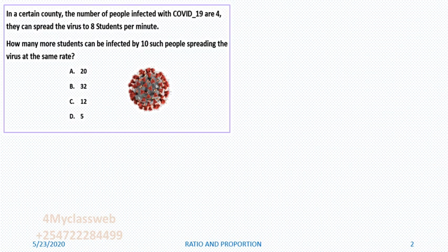Before I solve this question, it is always important to read the question and understand it. We are going to read this question together. We are told that in a certain county, the number of people infected with COVID-19 are 4, and they can spread the virus to 8 students per minute. How many more students can be infected by 10 such people spreading the virus at the same rate?